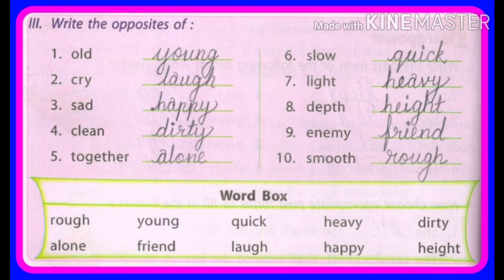Number seven: light — heavy. Light बोलने से हलका और heavy बोलने से भारी. Number eight: love — hate. Love बोलने से गहरा प्यार और hate बोलने से घृणा. Number nine: enemy — friend. Enemy बोलने से शत्रु और friend बोलने से मित्र, जो कि दोस्त. Number ten: smooth — rough. Smooth बोलने से मुलायम और rough बोलने से खुरदरा — smooth का उल्टा है rough.